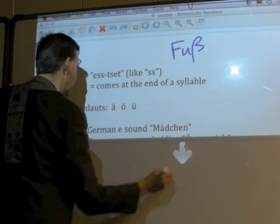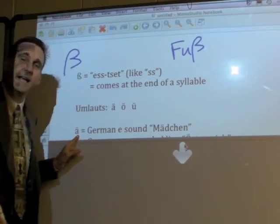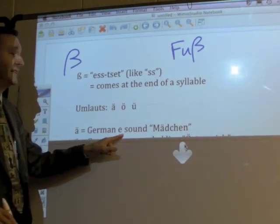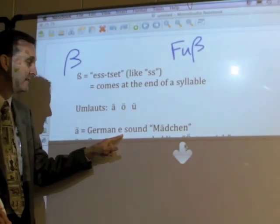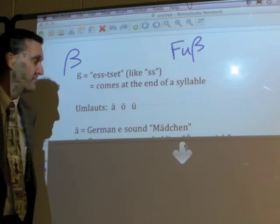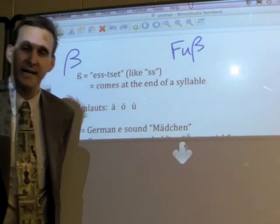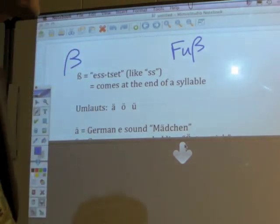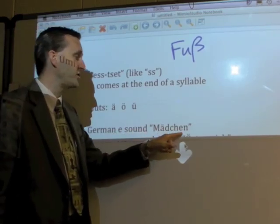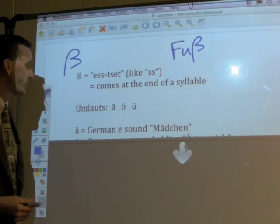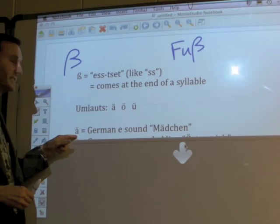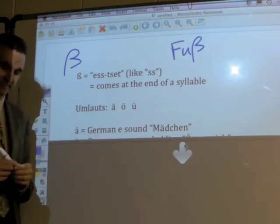The first one is the A-umlaut. The A-umlaut sounds just like the German E — 'ae'. A word like 'Mädchen' — M-A-umlaut-D-C-H-E-N — 'Mädchen'. A regular A without the umlaut is 'ah', and with the umlaut it's 'ae', so it sounds just like the German E.